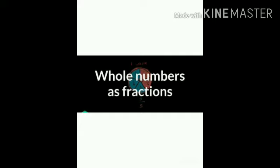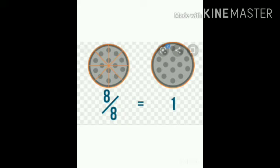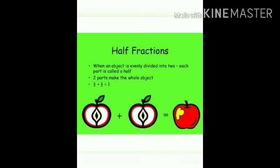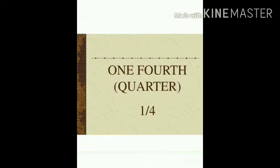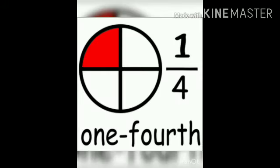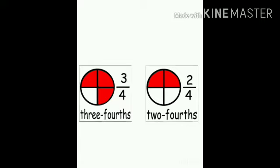Next is whole numbers as fractions. When the numerator and denominator are both the same, together they make a whole — whole means one. Next is half fraction. When an object is divided into two equal parts, that is a half. One-fourth or quarter is when an object is divided into four equal parts and one is shaded — this is called one-fourth.